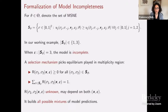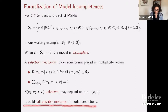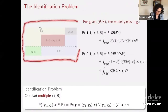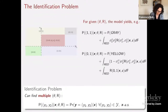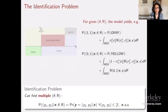What is missing from the model compared to a standard complete model is a selection mechanism — a rule telling us how to pick an equilibrium to be played in the multiplicity region. A selection mechanism must satisfy two key restrictions: it assigns a non-negative probability to each equilibrium strategy, and those probabilities sum to one. The problem is that this selection mechanism is completely unknown and may depend on both x and epsilon.